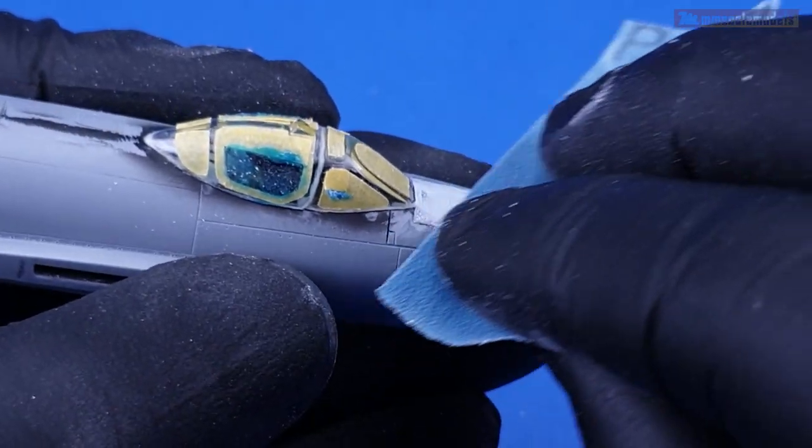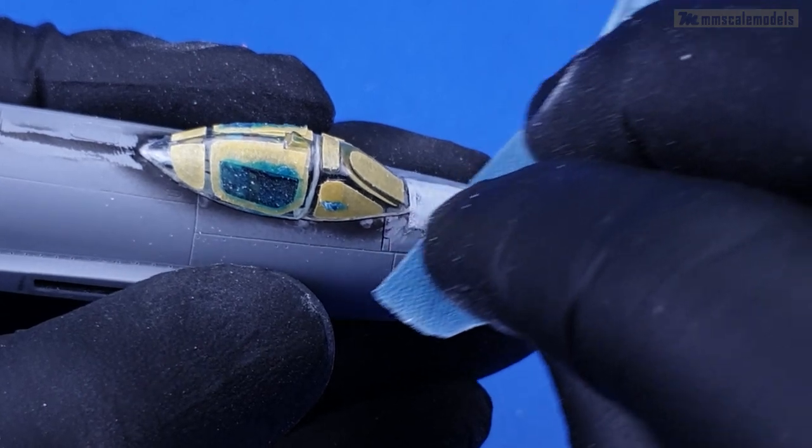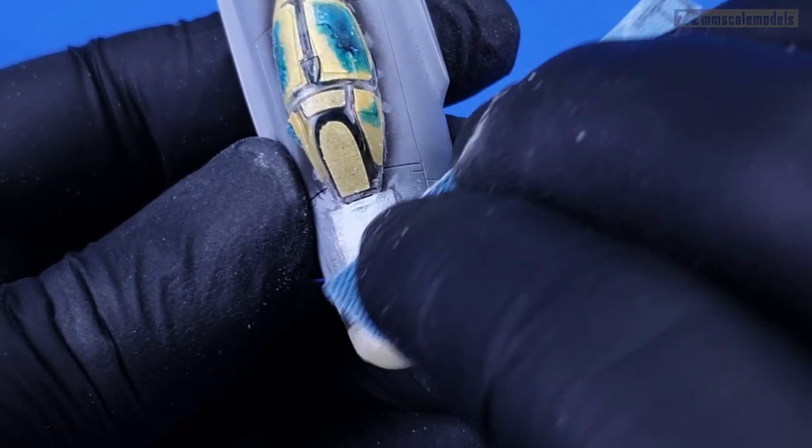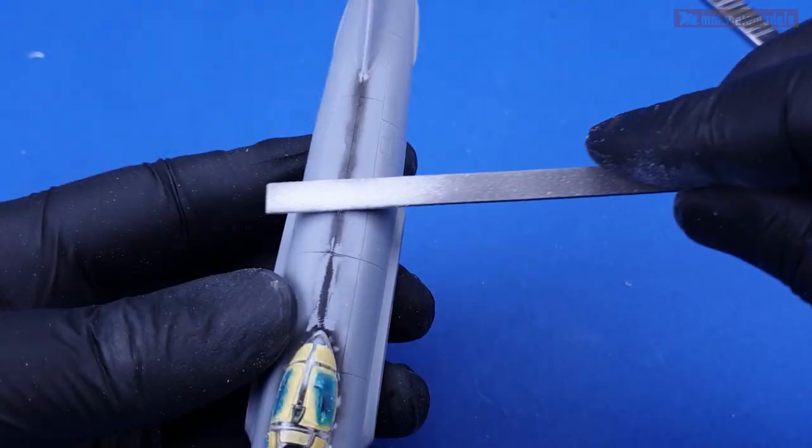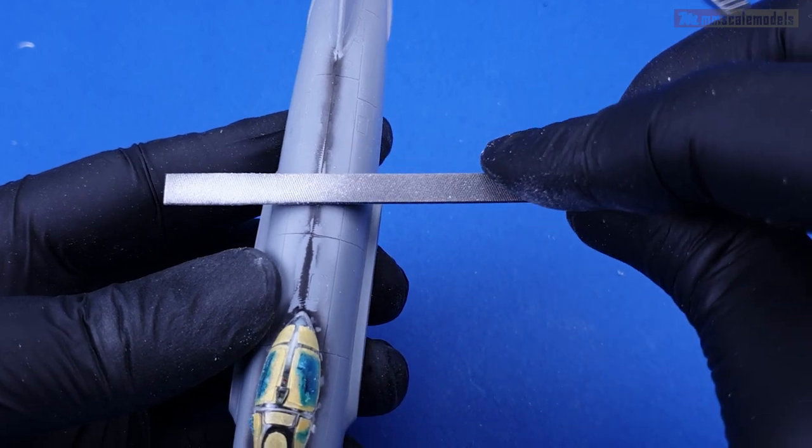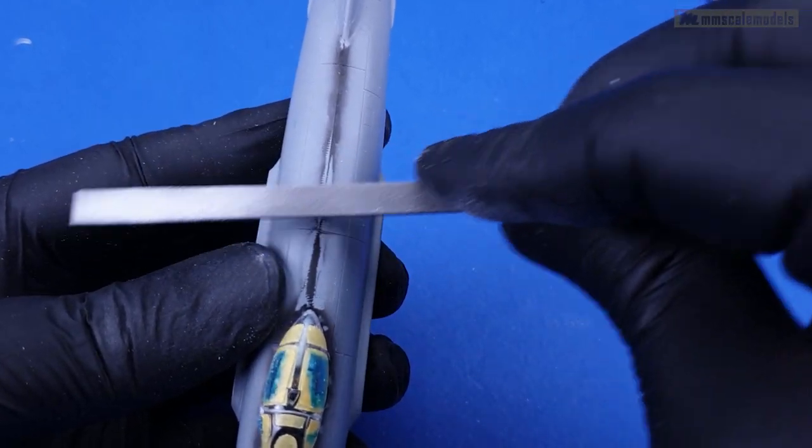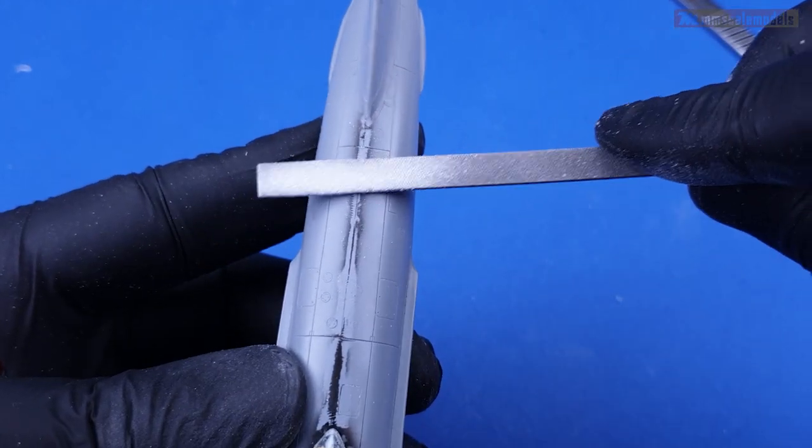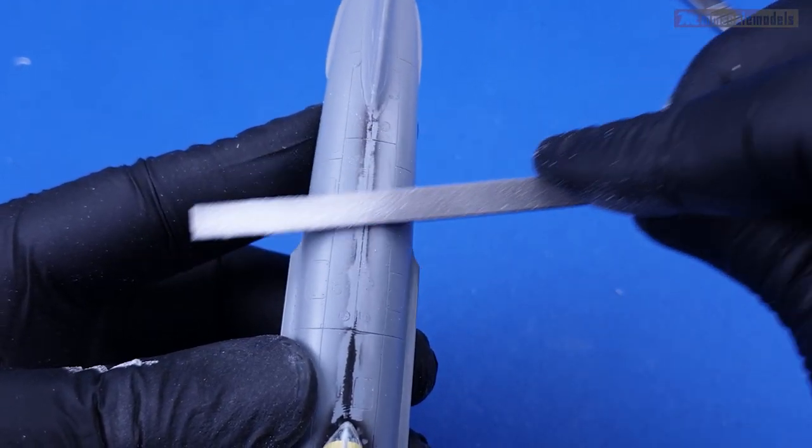Then I continued to contour the area with sandpaper. The joints along the fuselage were also sanded smooth in no time with the help of the file. When using files the pressure on the tool should be kept at minimum otherwise some deeper gouges may occur.